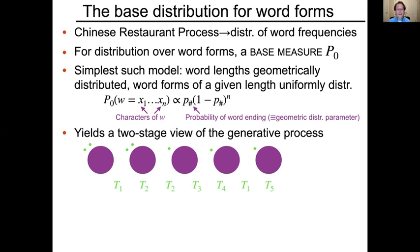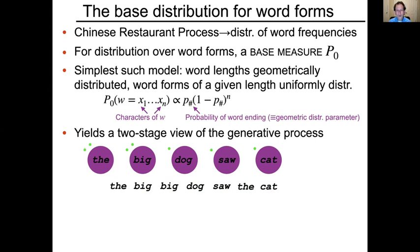That's the first stage — we've generated a sequence of word identities, and correspondingly a histogram of word frequencies: 2, 2, 1, 1, 1. We have not yet assigned forms to these words. In the second stage, we use the P-naught measure, sampling stochastically to generate labels for the tables — that is, forms for the word types. Then to create our corpus, we substitute those labels for the placeholders T_i, and we get the corpus.